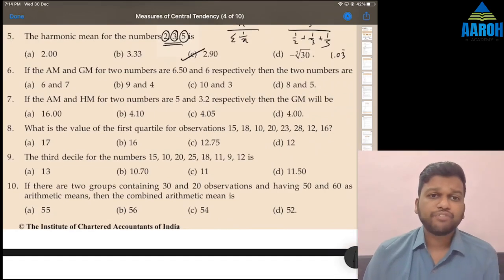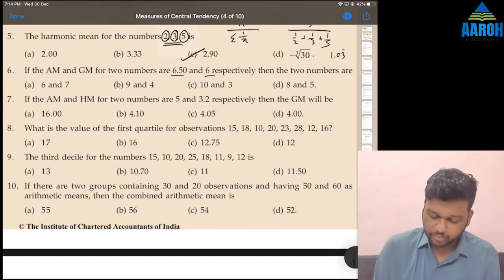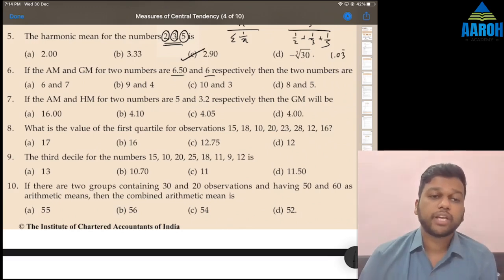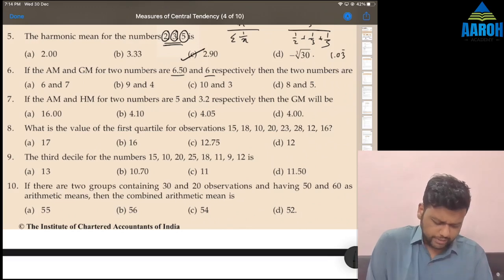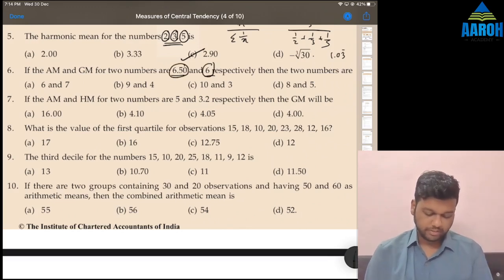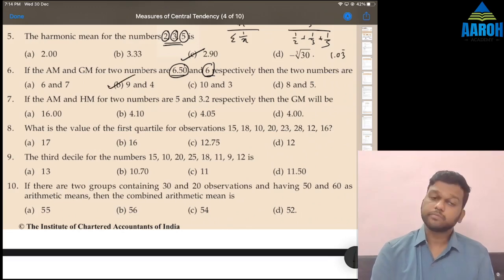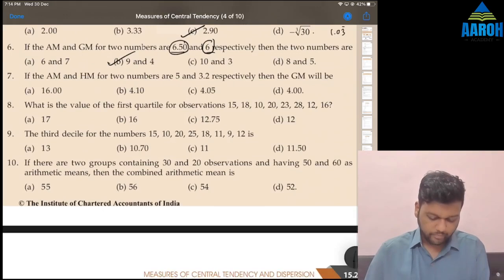If AM and GM for two numbers are 6.5 and 6 respectively, then the numbers are. This is very easy because they have given the options. We'll go by options. Check for GM. GM is 6, that means their product must be 36. So check if this is the correct answer. 9 plus 4 by 2 is 6.5, correct. And 9 into 4 square root is 6.